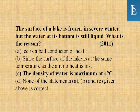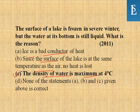The surface of a lake is frozen in severe winter but the water at its bottom is still liquid — this question came in 2011. The reason is that the density of water is maximum at four degrees centigrade. That's why water at the bottom remains liquid. This is the correct option.